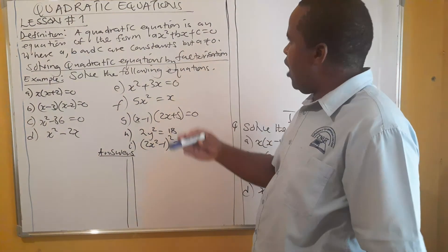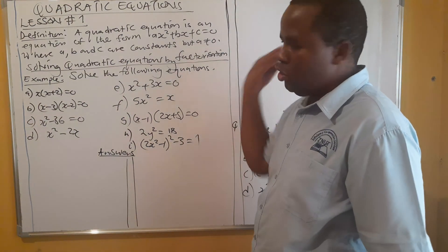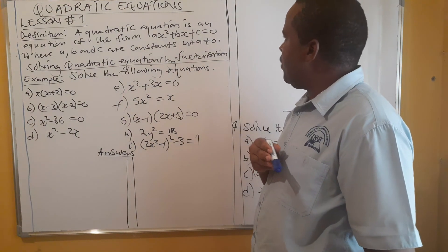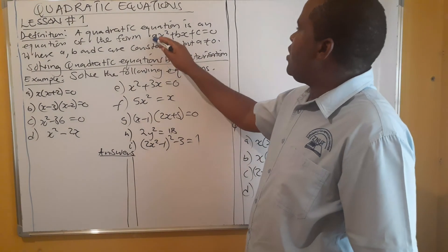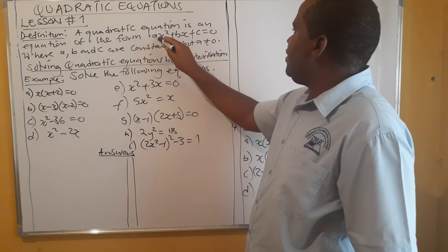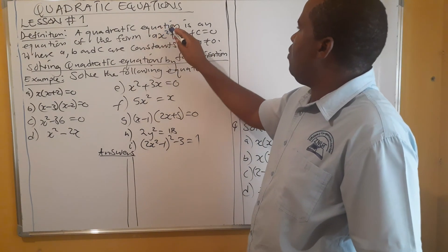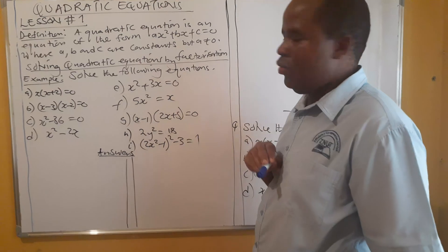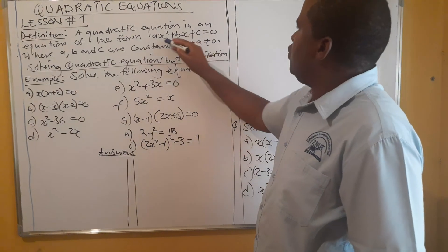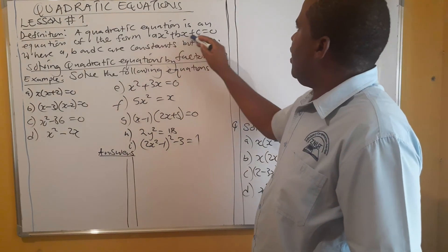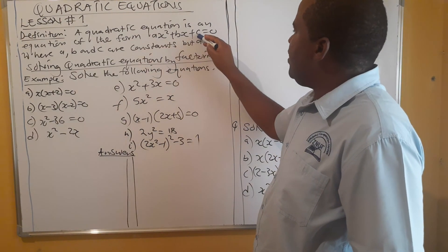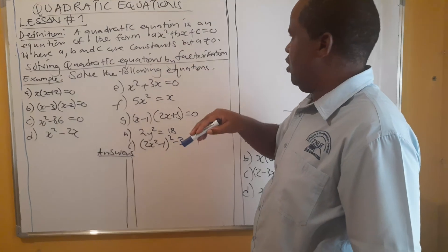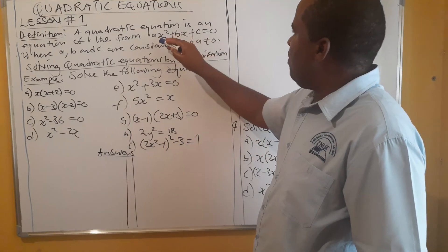The highest power is 2. You have to make sure that a should not be 0, because if a is 0, it will change from a quadratic to a linear equation. To solve a quadratic equation simply means you have to find the solutions to that equation.